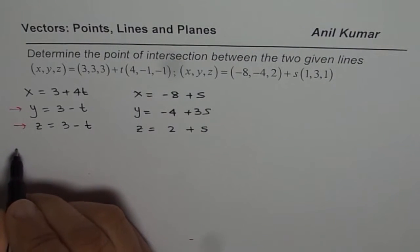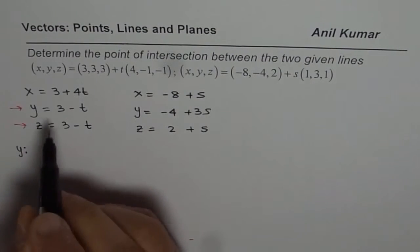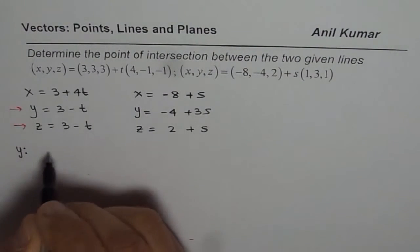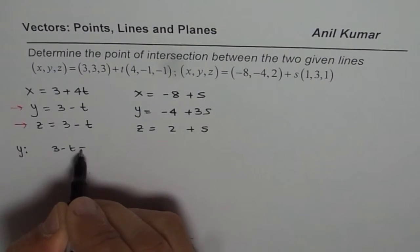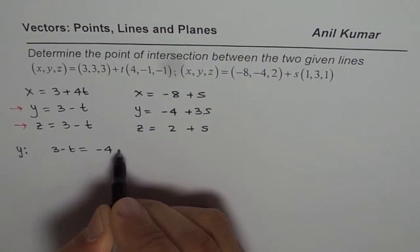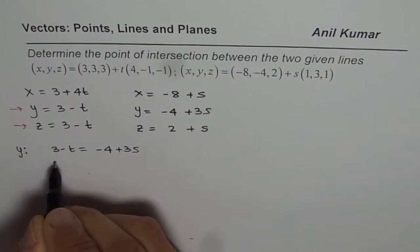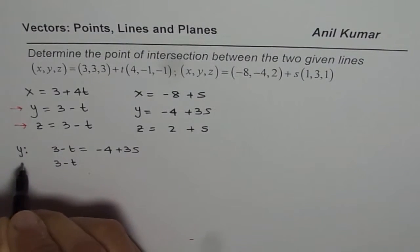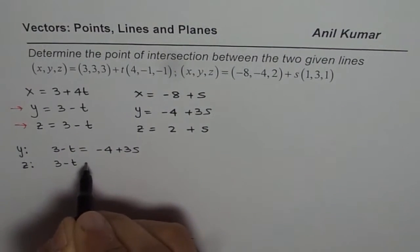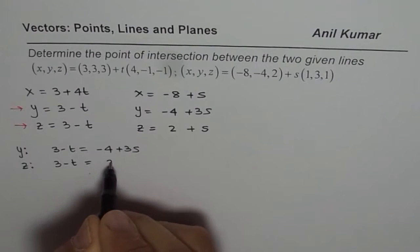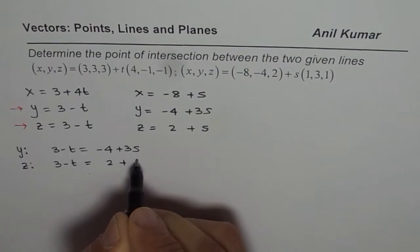So we are equating the value of y first. We could equate from both and say 3 minus t is equal to minus 4 plus 3s. And from the second one we have 3 minus t, that is for z, equals to 2 plus s.